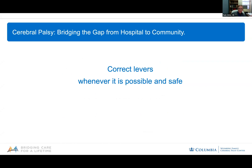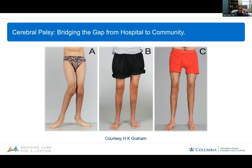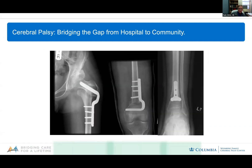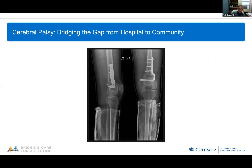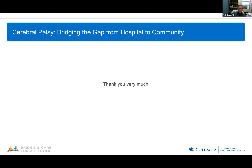We correct the levers — we untwist them whenever possible and safe. This is courtesy of Professor Kirk Graham from Melbourne: you saw a child very twisted, and after a few osteotomies, much further down the track, this person continues to be straight and well aligned. The osteotomies we normally do include derotating the proximal femur, derotating or extending the distal femur, and derotating the tibias. Very often we also do osteotomies to the feet. When the knee deformity is too severe, in order to spare the hamstrings, instead of lengthening them we extend the femur to correct the deformity.